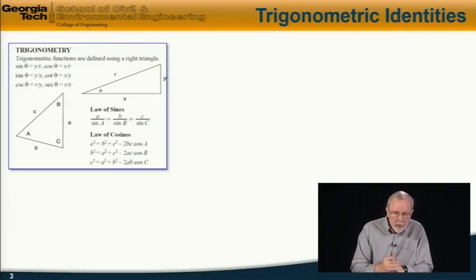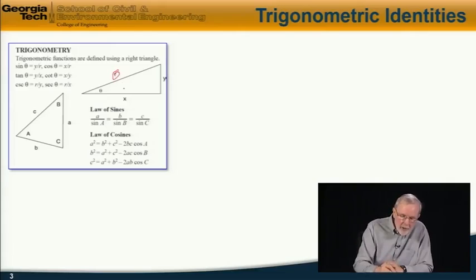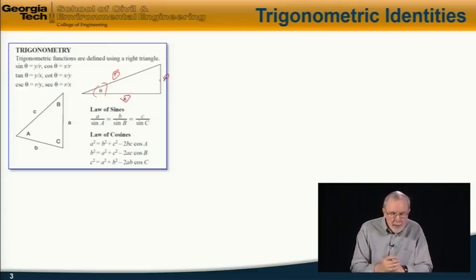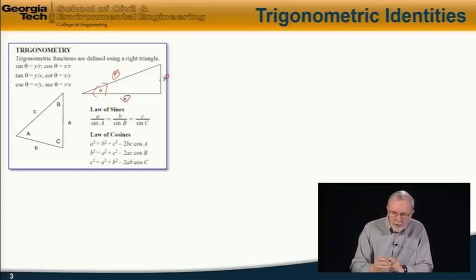From a right triangle, where r is the hypotenuse, x the adjacent, and y opposite relative to the angle theta. So sine theta is opposite over hypotenuse, y over r, cosine theta is adjacent over hypotenuse, x over r, etc.